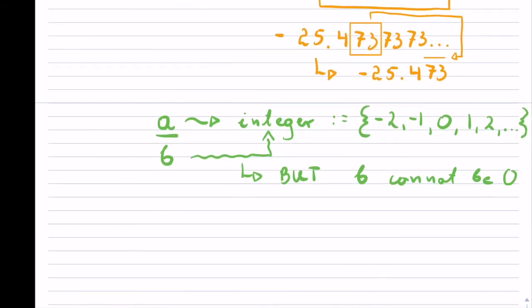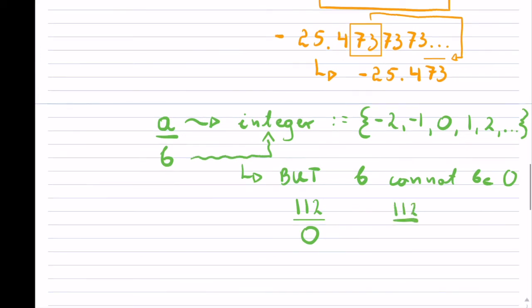For instance, you can't have an integer, a random integer, let's say 112, and go about and say over zero. This would not be rational. But if you would write 111, say over some other integer, say like four, this would be rational. Because the top is an integer and the bottom is an integer and not zero.